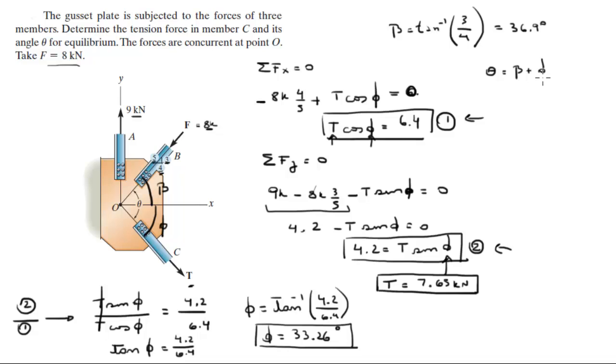And you know that theta, which is the angle they want you to find, is beta plus phi—the one we calculated here and the one we calculated right here. And by adding them together, you get theta, which comes out to be 70.1 degrees. Final answer for theta.